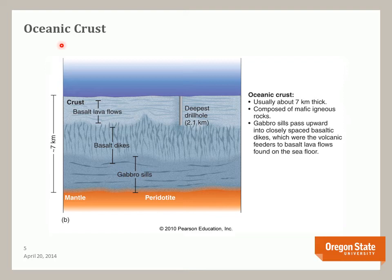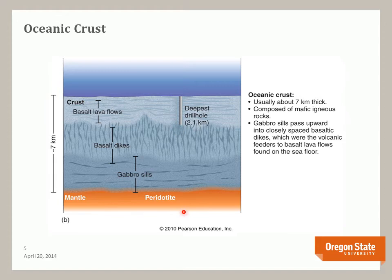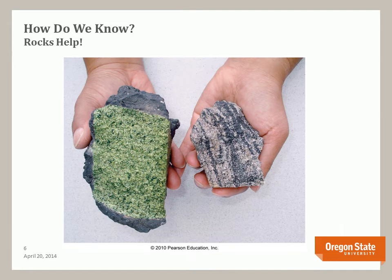The second type of crust is the oceanic crust, which underlies all the oceans. It's about seven kilometers thick and consists of mafic igneous rocks rich in iron and magnesium, with a specific layering. Starting at the mantle, there's an igneous rock called gabbro, then gabbro sills, then dike structures of basalt, and then basaltic lava flows at the upper part. We have not sampled much of the ocean crust below 2.1 kilometers, so how do we know what's down below this level?